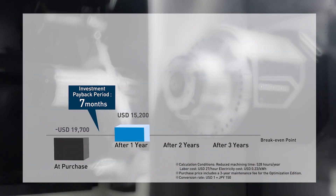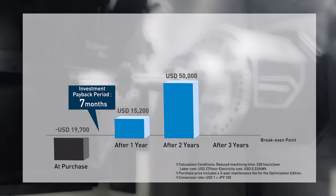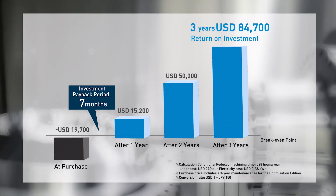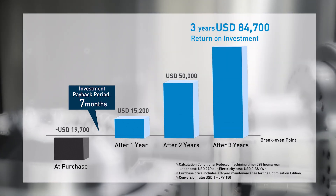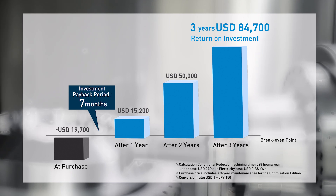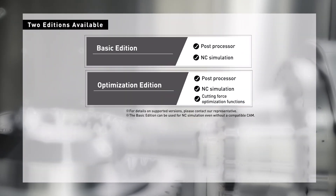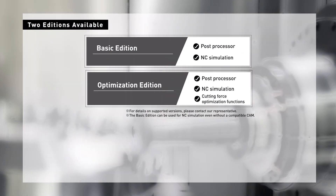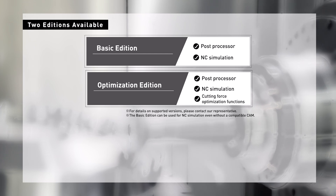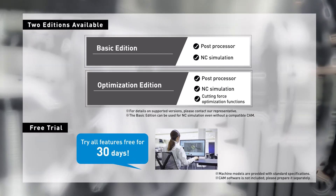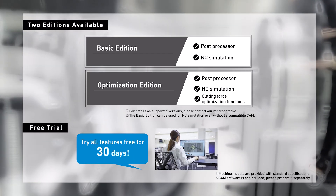Such efficient and high-precision production not only reduces costs, but also delivers significant returns on investment. We offer Celos Dynamic Post in different editions tailored to your specific needs, and a 30-day free trial is available for interested customers.